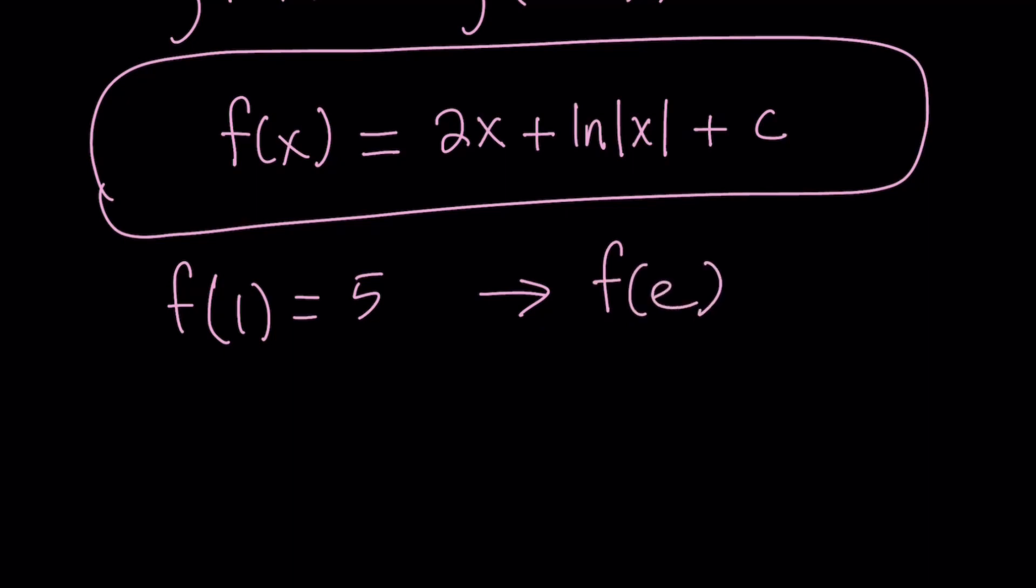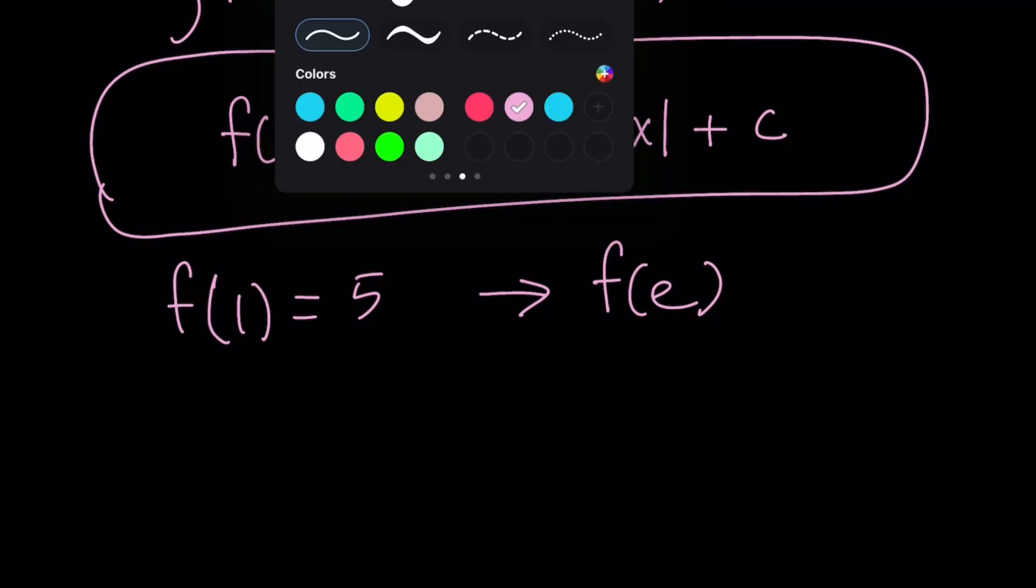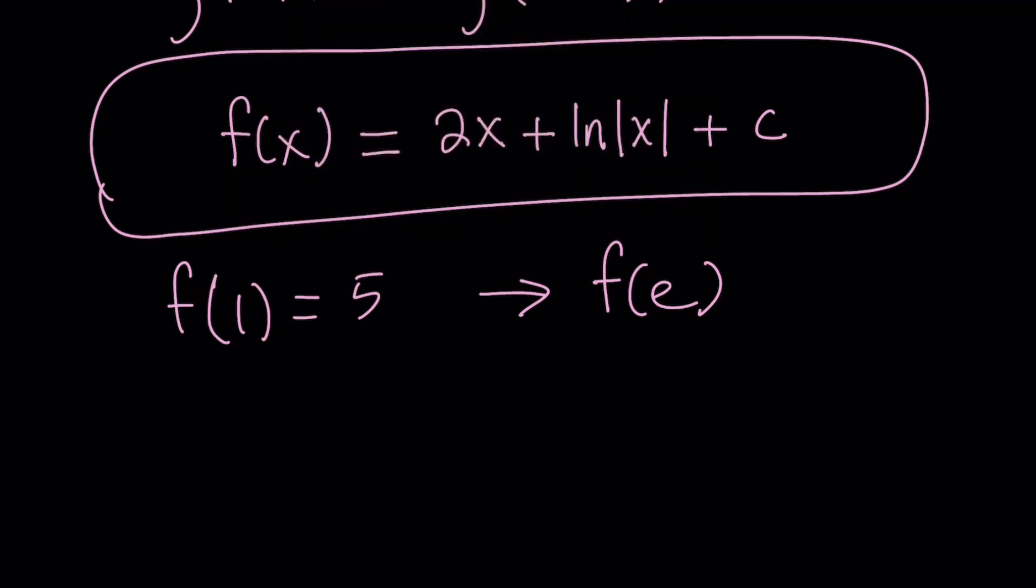And from here, we're supposed to find f of e. So how do you find f of e? You can replace x with e. But why were we given f of 1 equals 5? That was given as an initial condition so that we can plug it in and find the value of c.